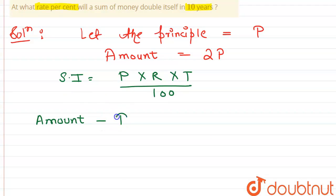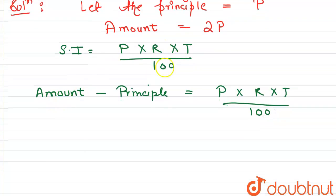Amount minus principle is equals to P into R into T by 100. So here amount is 2P.